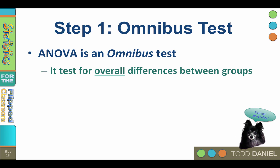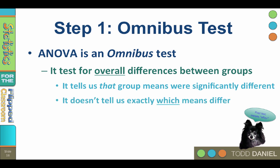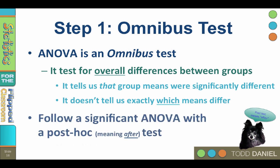The reason for these two steps is that ANOVA is an omnibus test. Omnibus is something that comprises several items — an omnibus test comprises several comparisons. ANOVA tests for overall differences among multiple groups. ANOVA tells us that differences exist somewhere, but it will not tell us where those differences are. It tells us that group means differ, but not which means differ. To know which means differ, we must do a post hoc test.